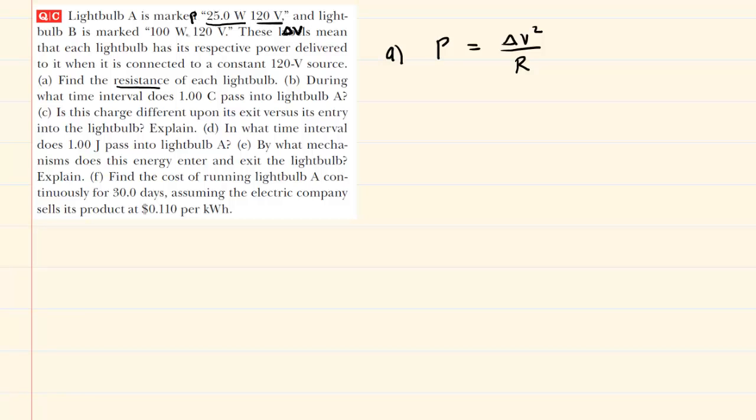So we would want a relationship between power, potential difference, and resistance. And of course, such a relationship exists. We have written it already in part A here. We want to solve this equation for resistance, so let's multiply both sides of the equation by resistance. And then we will divide both sides by the power. So we can see that the resistance is equal to the potential difference squared divided by the power.